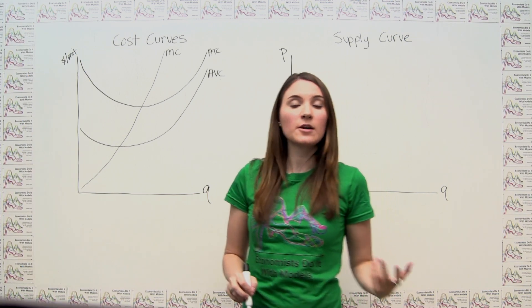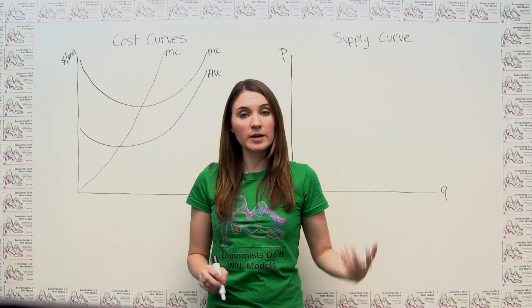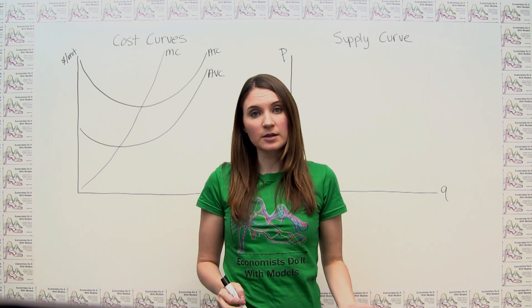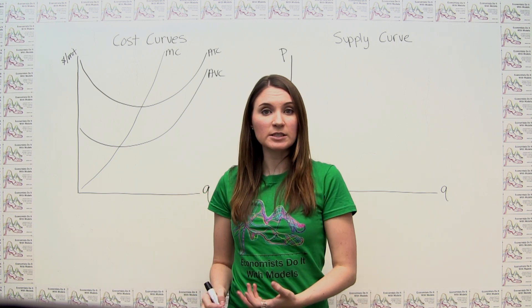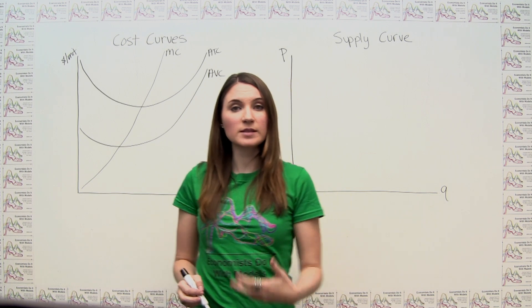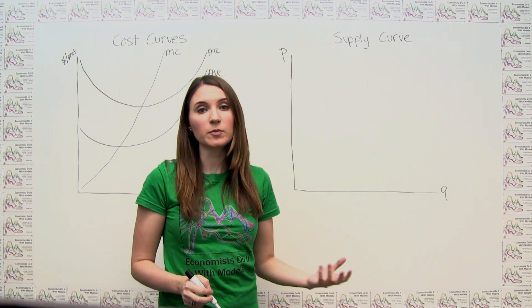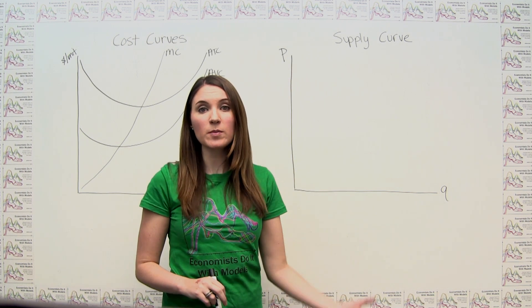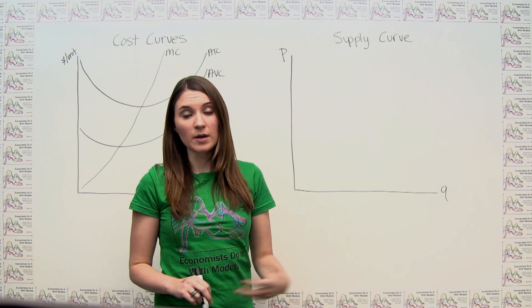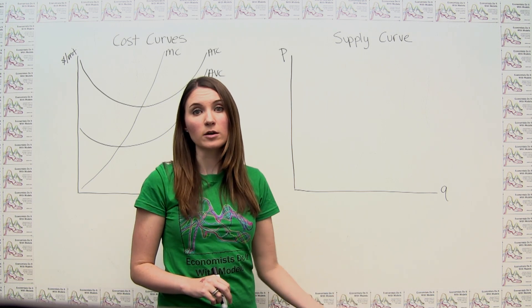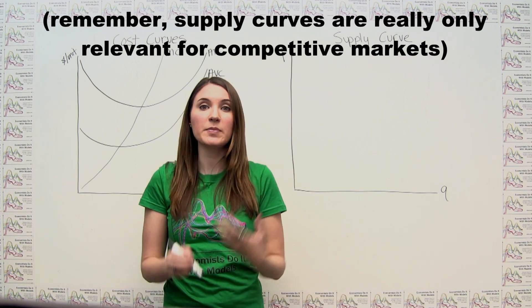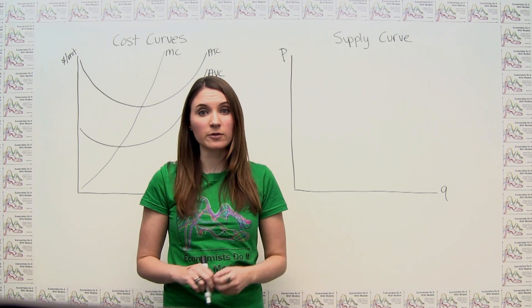Now that we understand how firms in competitive markets maximize profit, and we've introduced the concept of the shutdown condition, we're ready to talk about how to derive the supply curve both for an individual firm in a competitive market and also for a competitive market overall. Let's start with an individual firm and then build up the market supply curve from there.